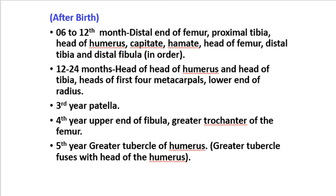From 12 to 24 months: head of humerus, head of tibia, head of first four metacarpals, lower end of radius center — they appear. In the third year: center for patella appears. In the fourth year: upper end of fibula, greater trochanter of the femur — they appear. In the first year: greater tubercle of the humerus — greater tubercle fuses with the head of the humerus.